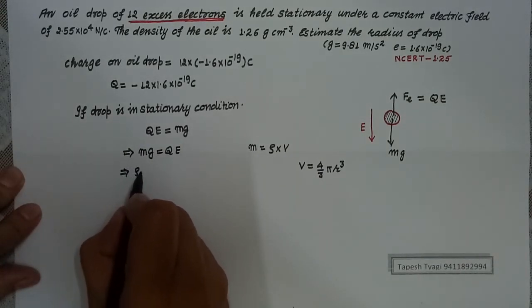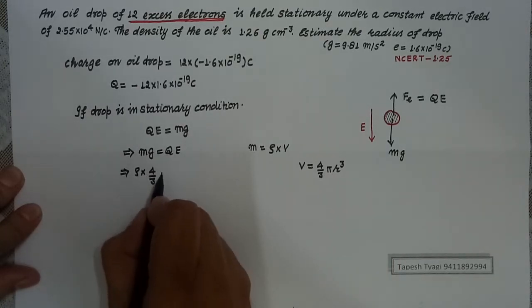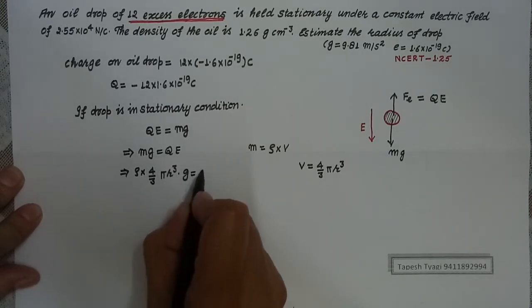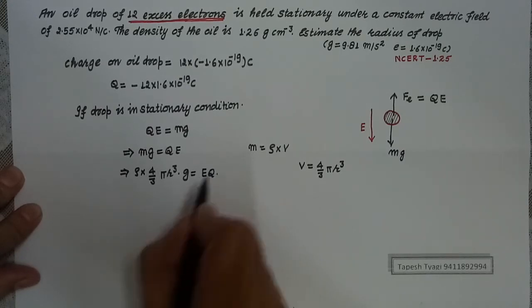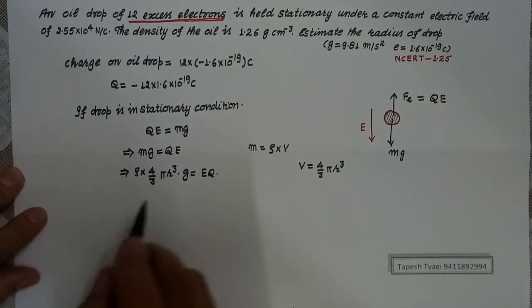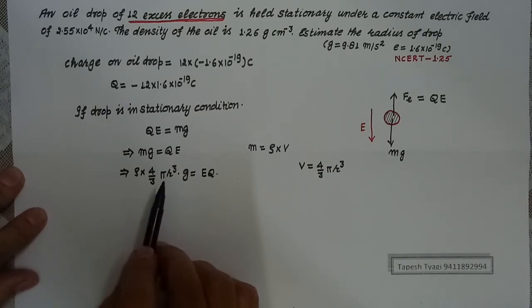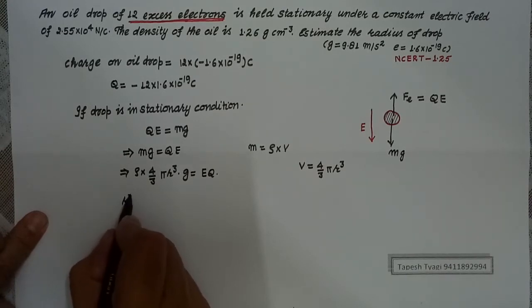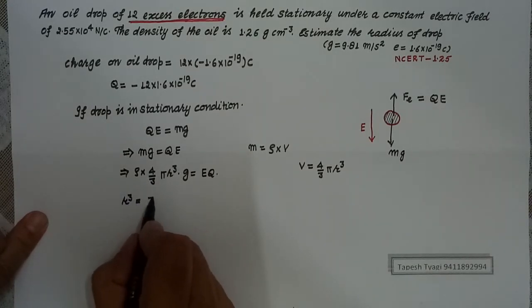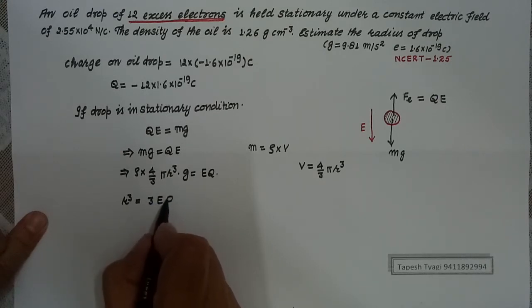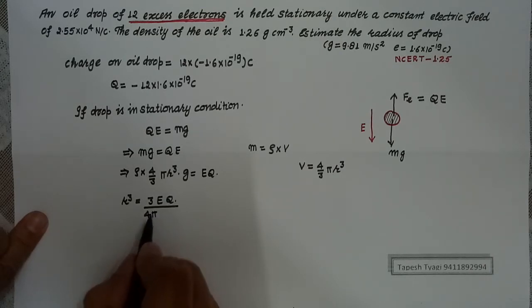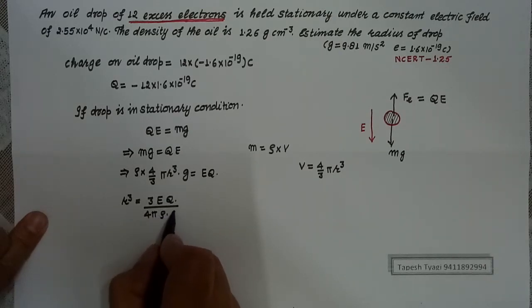Putting the value of M = ρ × volume = ρ × (4/3)πR³ into the equation, we get: ρ × (4/3)πR³ × g = Q × E. From here we can find the value of the radius of this oil drop. So R³ = (3 × E × Q) / (4π × ρ × g).